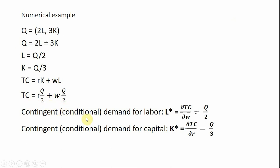And then taking our partial derivatives, so the conditional demand for labor is just going to be Q divided by 2, and the conditional demand for capital will just be Q divided by 3. They're referred to as conditional because it's conditional on the output of the firm. Q is showing up here in our input demand functions. Okay, I hope you found this video helpful.